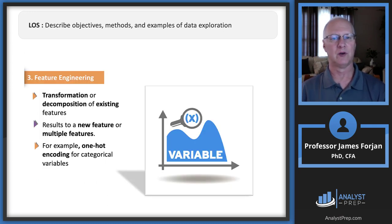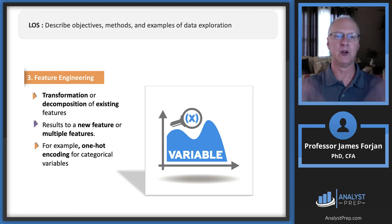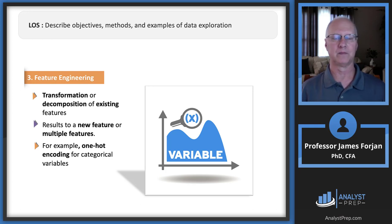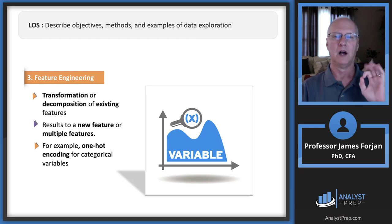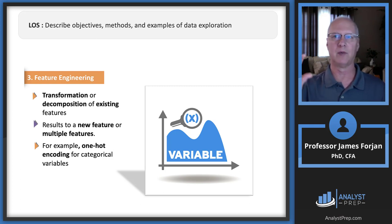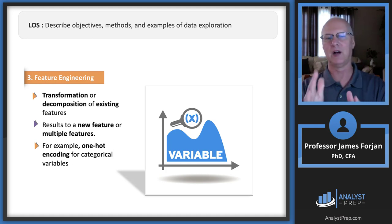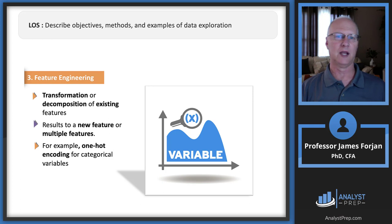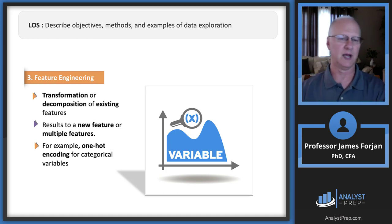Feature engineering involves transformation or decomposition — creating a new feature or multiple features. One hot encoding is a good example, similar to dummy variables. In the old days we had a dummy variable: if the firm increases its dividend, that's a 1; if not, that's a 0. But here we don't always have binary data — we might have a series of variables like colors: red, green, and blue. If it's red, it's a 1; if it's green or blue, it's a 0. One hot encoding works similarly to dummy variables.